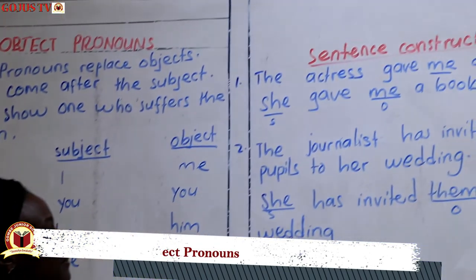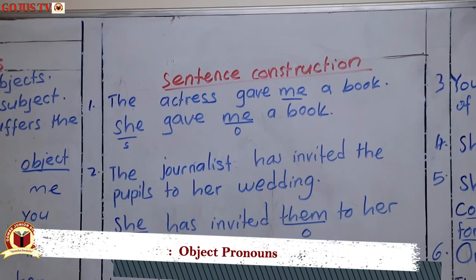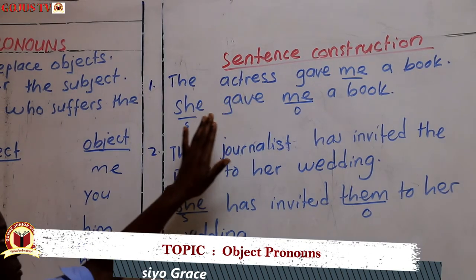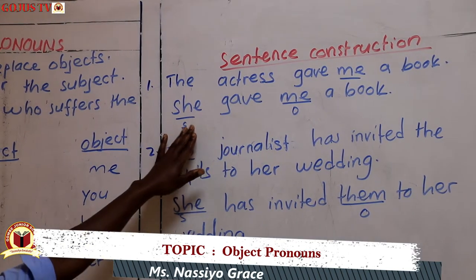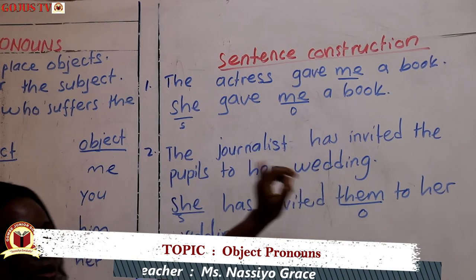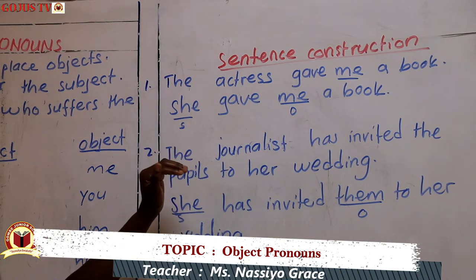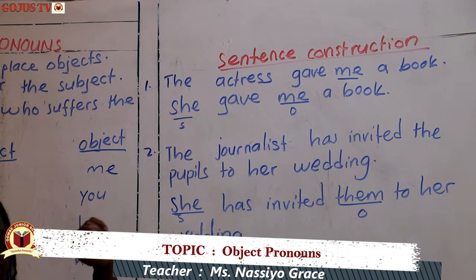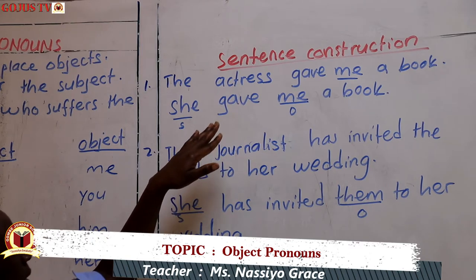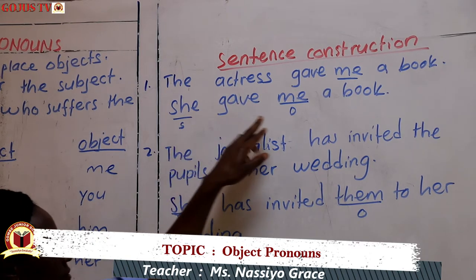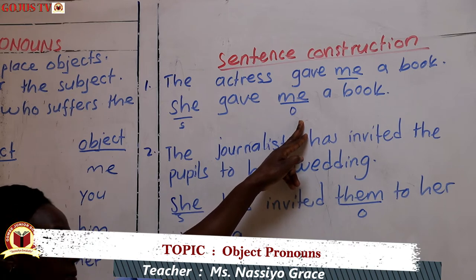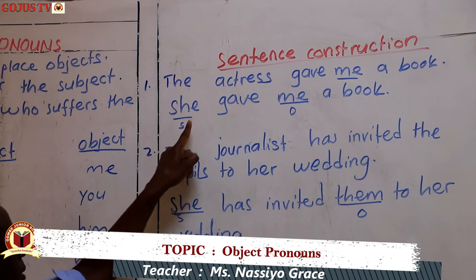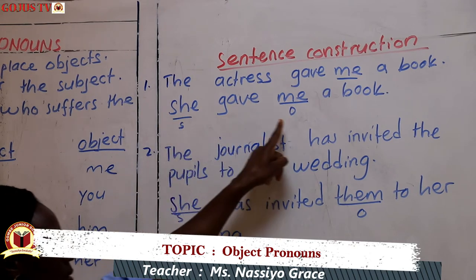Our first example: 'The actress gave me a book.' If we don't want to use 'the actress', since she is the subject, we can say 'She gave me a book.' Here 'she' is the subject. The object comes after the subject, so 'me' is the object. She gave me a book — we have shown you both the subject and the object.